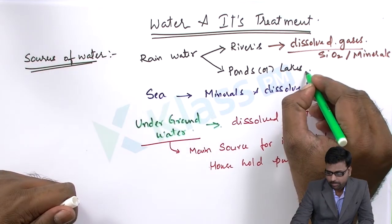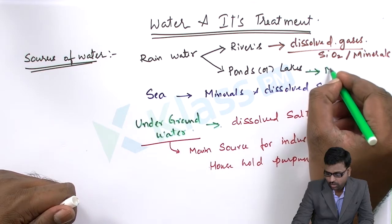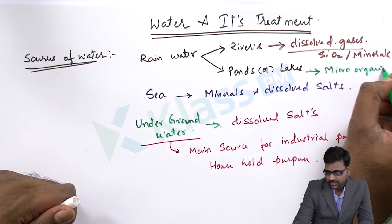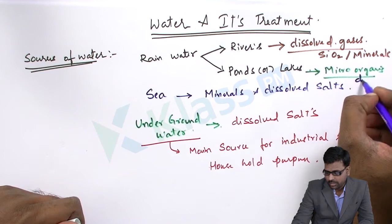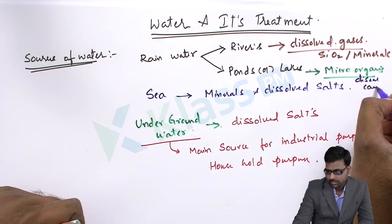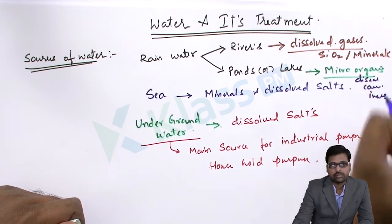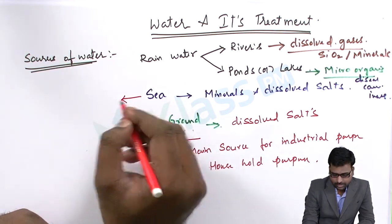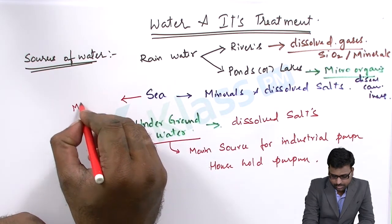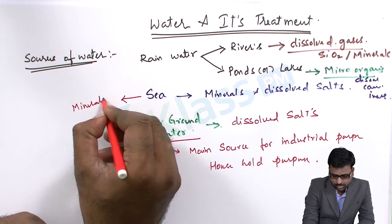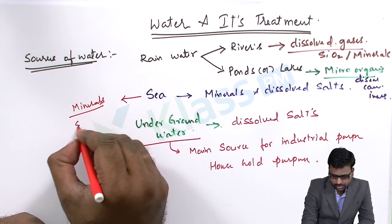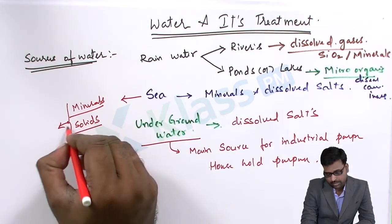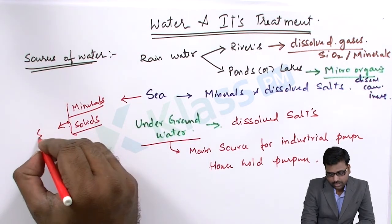Pond and lake water are the main sources of microorganisms as well as disease-causing insects. Seawater contains most of the minerals and dissolved solids, which makes it salty.